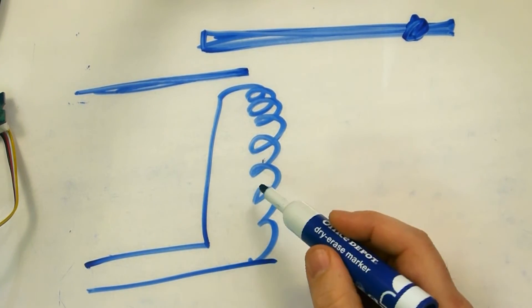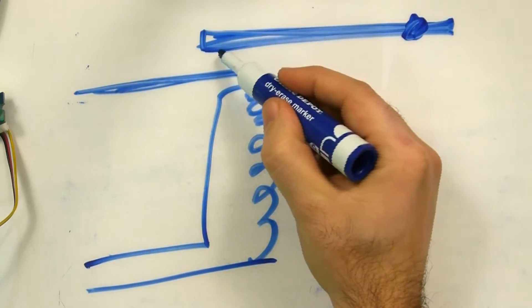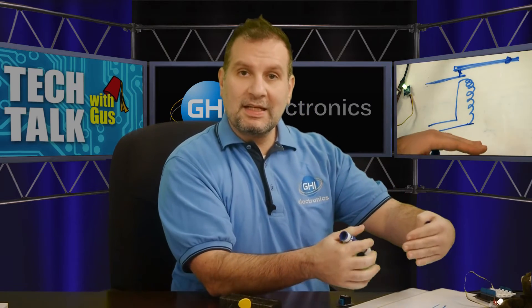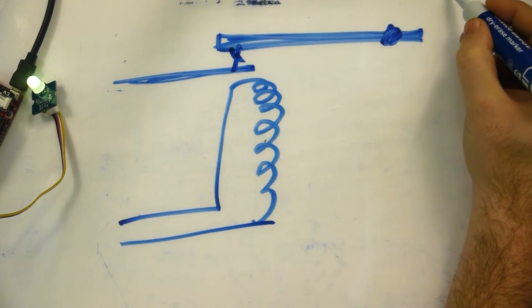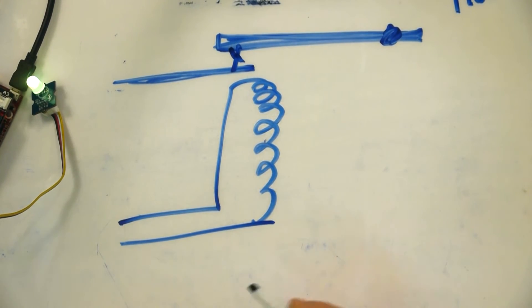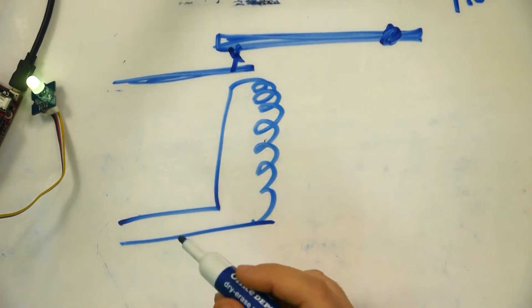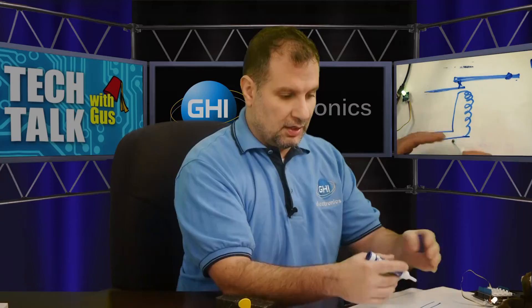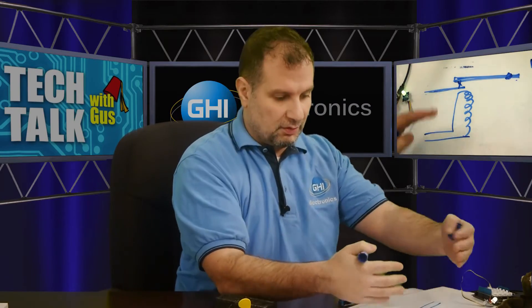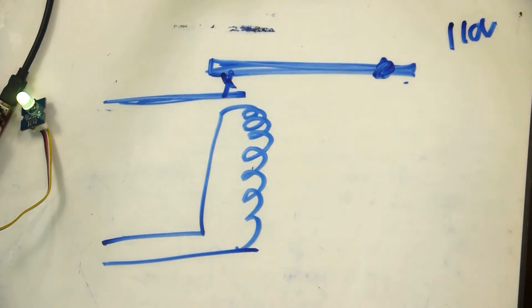When the coil is energized, it becomes a magnet and pulls in that movable metal piece, so the two metal pieces touch each other and make a connection. These two sides are physically isolated — they are not connected at all. This is very useful if you have 110 volts on one side and your low-voltage circuit on the other side. It's very safe because there's no way the 110 volts can reach your circuit — they are physically isolated. You can actually hear the relay click when you energize the coil.